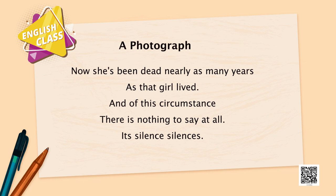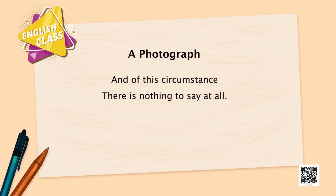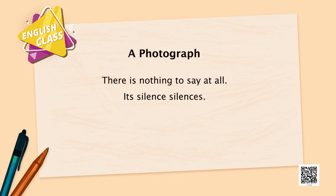Now let us look at the third part of the poem. Now she has been dead nearly as many years as that the girl lived. And of this circumstance, there is nothing to say at all. Its silence silences. Who is 'that girl'? That girl might be the poet — she was laughing before I was born. Most likely the mother may have died soon after the birth of the child. And of this circumstance, there is nothing to say at all — she is not blaming anyone; this is what life has been. There is nothing to say at all.